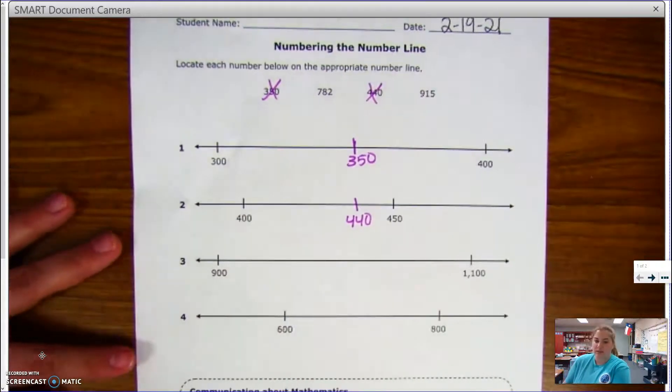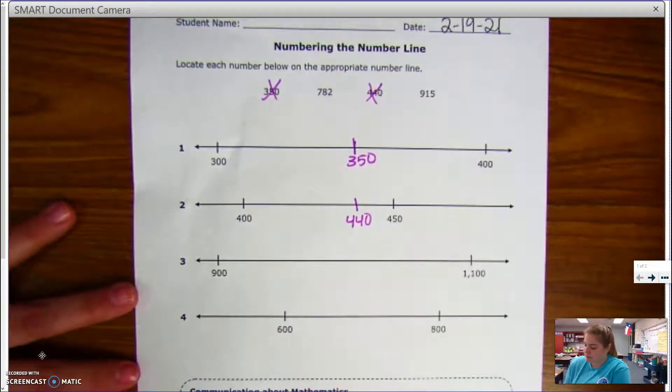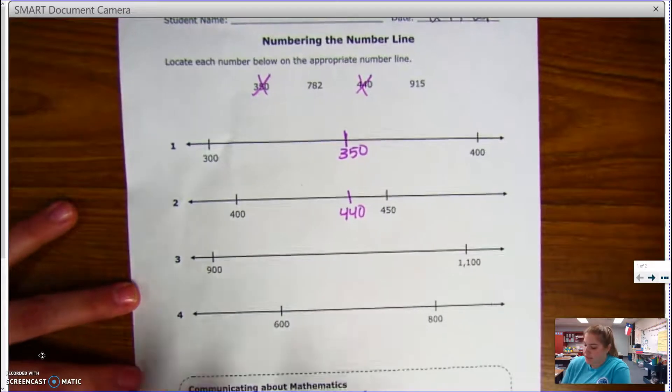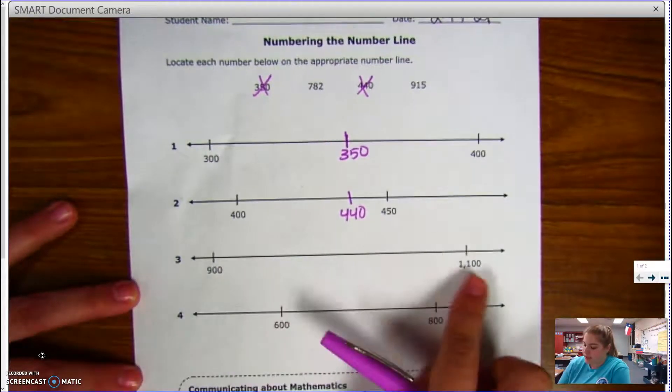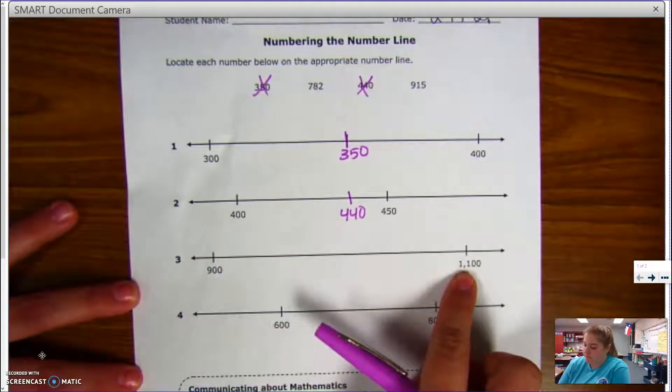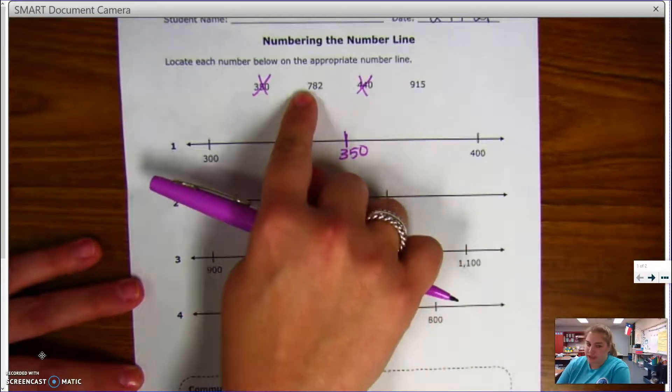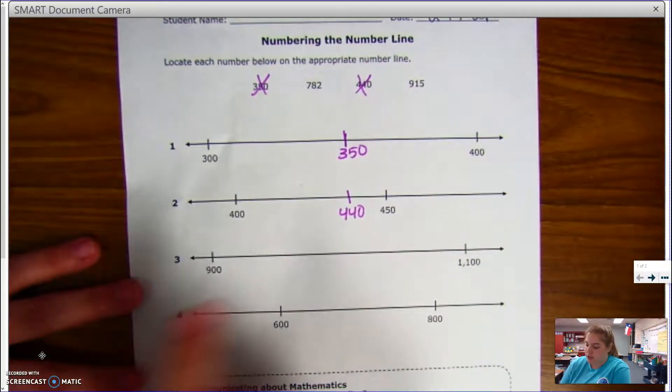Now I need a number between 900 and 1100. 782 is less than 900, so I know that can't be the number I'm looking for. So 915 is the number I'm going to place.